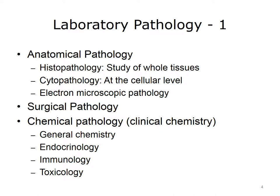Chemical pathology includes tests of general chemistry, such as electrolytes or liver function tests; tests of endocrinology, such as the hemoglobin A1C test, which is a blood test used to diagnose and manage diabetes; and tests of immunology or tests of toxicology.